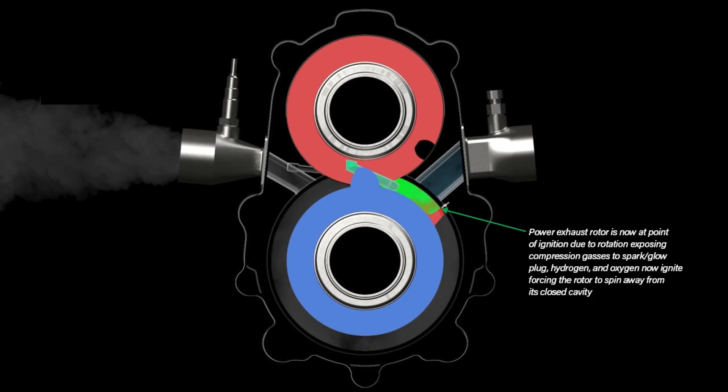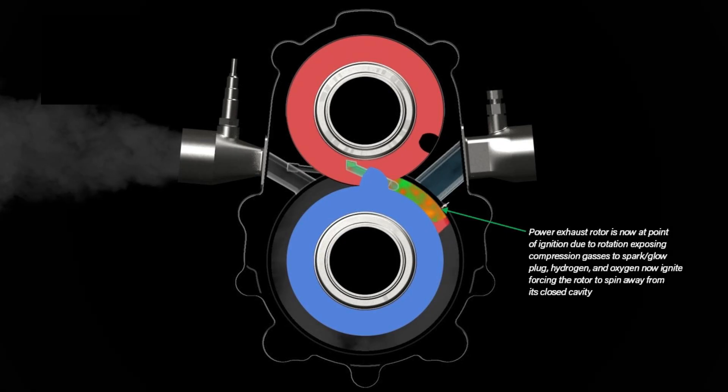Power exhaust rotor is now at point of ignition due to rotation exposing compression gases to spark glow plug. Hydrogen and oxygen now ignite, forcing the rotor to spin away from its closed cavity.